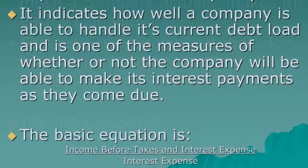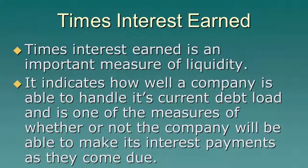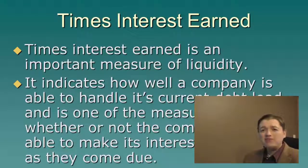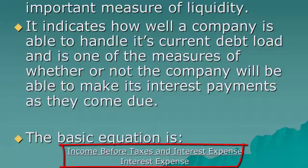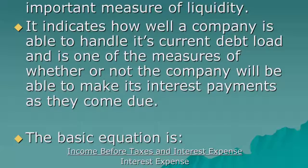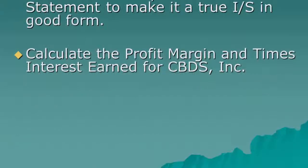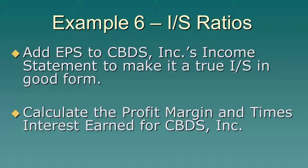The other income-statement ratio is times interest earned, which is a measure of liquidity — how well a company can handle its debt and make required interest payments. It's also a risk ratio used to decide whether a company has too much debt or is so locked into interest payments that it has fewer other opportunities. The equation is income before taxes and interest expense divided by interest expense. The reason for adding back income tax expense is that if all profit went to interest, there would be no taxable income, so no taxes owed.